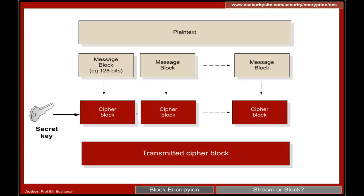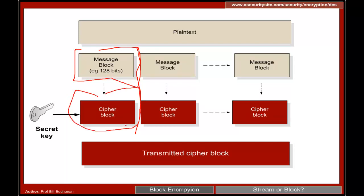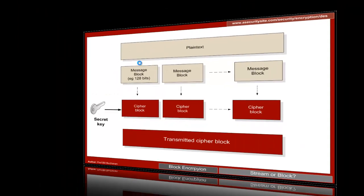DES is a block encryption method where we take a message block, apply the key to it, and it becomes a cipher block. Each block is encrypted with the key and then we have the overall transmitted cipher block. The message must be split up into fixed-size blocks.